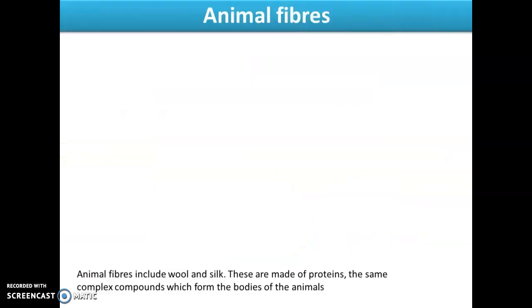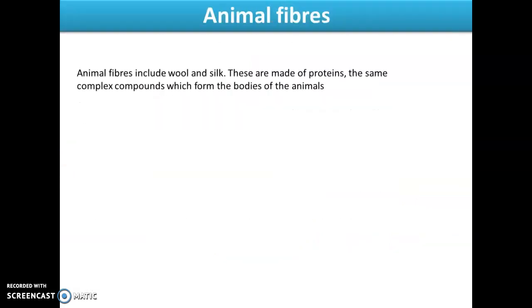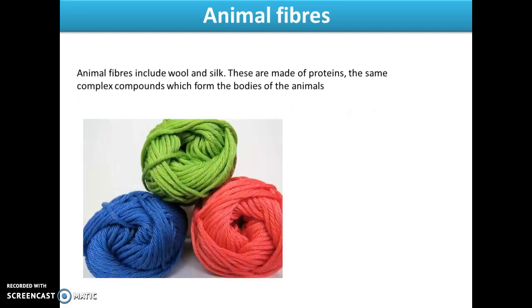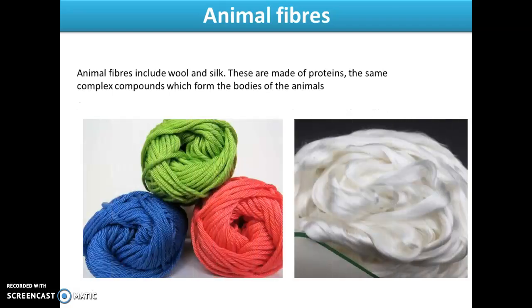Animal fibers include wool and silk. Wool and silk are made of protein — the same complex compound which forms the body of any animal.